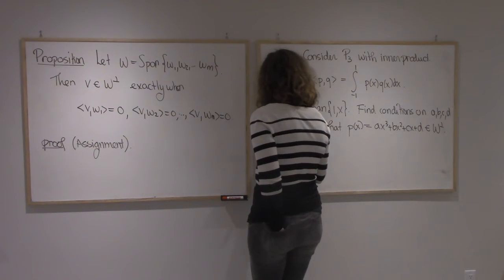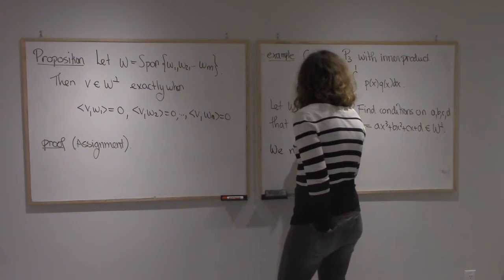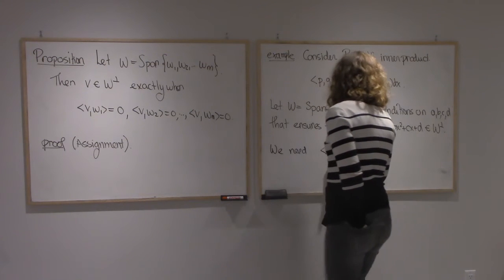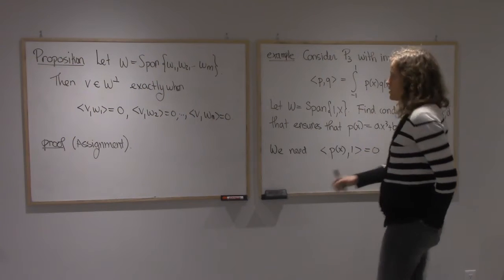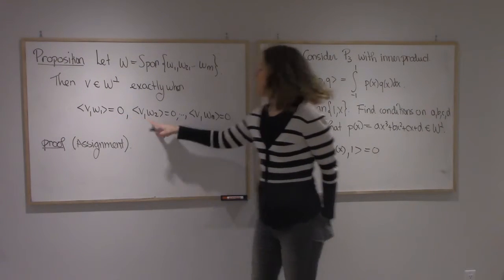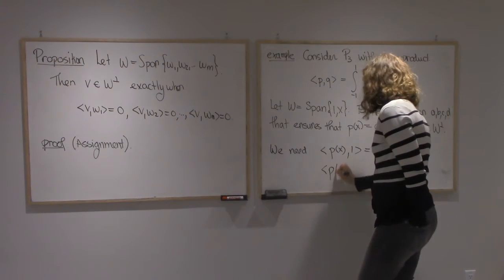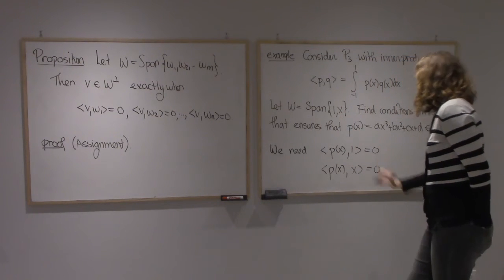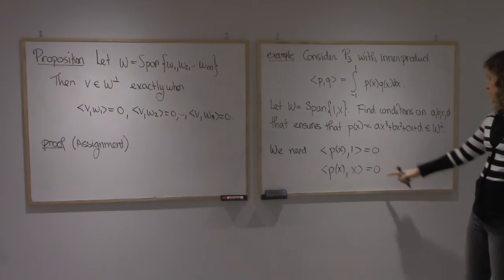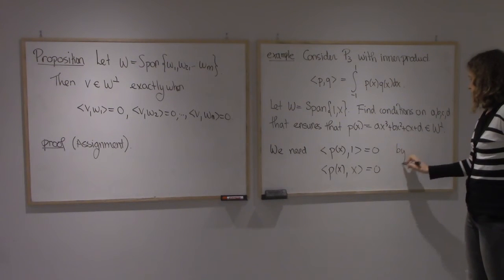So we need P(x), 1 equals 0. That would be the first condition. The second one is I need P(x) with the second generating element to be 0 by the proposition.